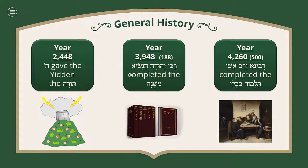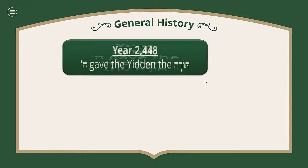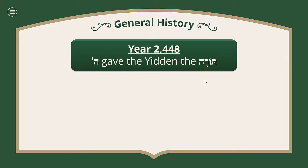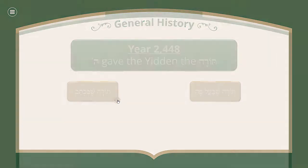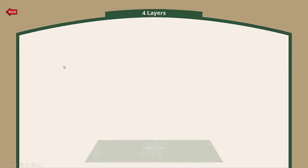When Hashem gave the Yidden the Torah — when we say Torah, what does it mean? There is one Torah, and then we have a qualifying statement: there is Torah Shebiksav and Torah Shebalpeh. So there are two parts within the Torah: Torah Shebiksav and Torah Shebalpeh.